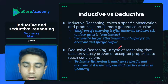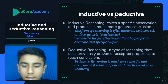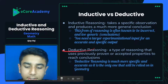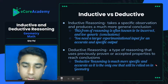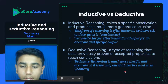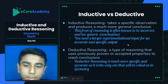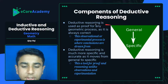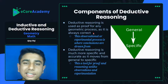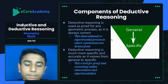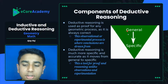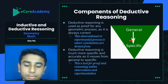We're not going to focus on inductive reasoning because it's not what you'll be using in geometry. Deductive reasoning is what you'll use throughout your geometry course. So we're going to focus on deductive reasoning and all of its components and laws. Deductive reasoning is used as proof for any geometric process because it takes already proven or accepted properties and uses them as its own components. This observational and experimental process is where conclusions are drawn from — a generic input or hypothesis produces a very specific and accurate conclusion.